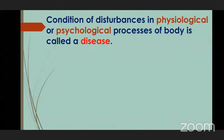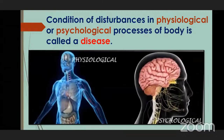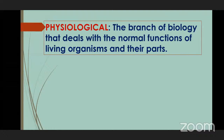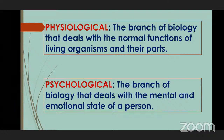What is disease? Disease means any disturbances — any kind of disturbances that happen physiologically or psychologically in your body. Physiological is a branch of biology that deals with the normal functions of living organisms and their parts. Psychological is the branch that deals with the mental or emotional state of a person. Whenever a person is not physically or mentally fit, that means the person is suffering from some kind of disease.